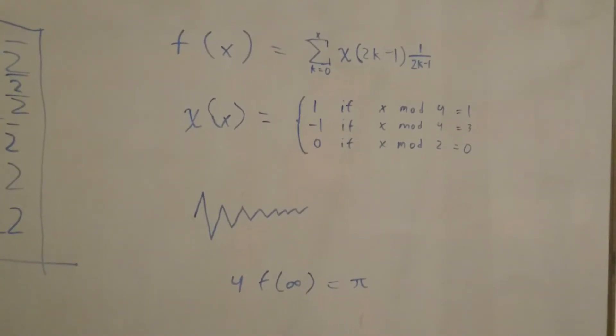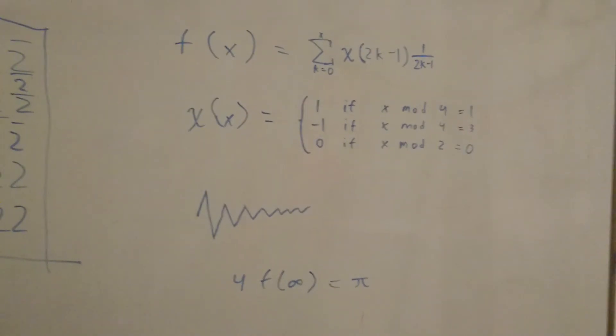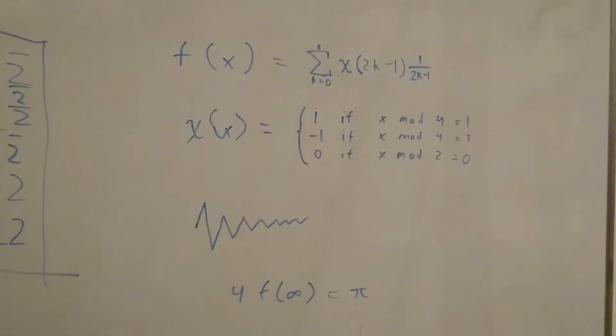So the bigger the value of x, the closer it is to pi over 4. And you made it up yourself?